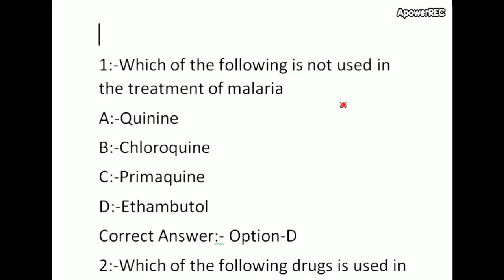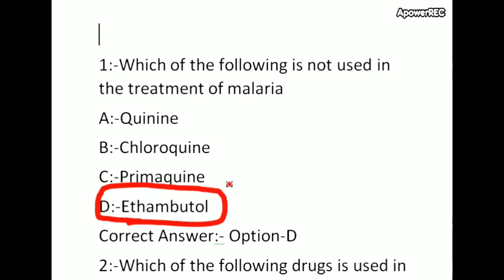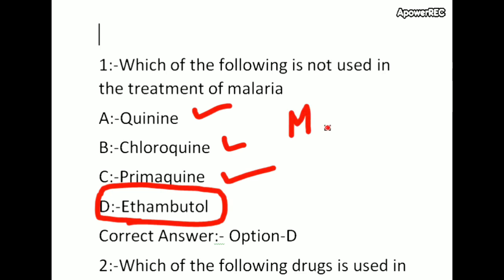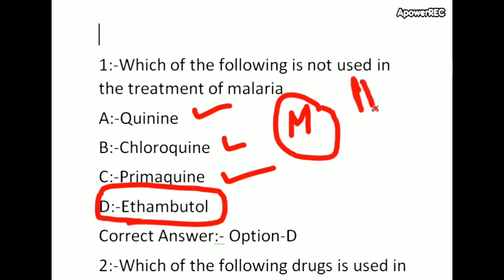Which of the following is not used in the treatment of malaria? The correct answer is ethambutol. Ethambutol is an anti-TB drug, so ethambutol is not used in the treatment of malaria. Quinine, chloroquine, and primaquine are malaria treatment drugs. Malaria is a single-cell parasite disease.